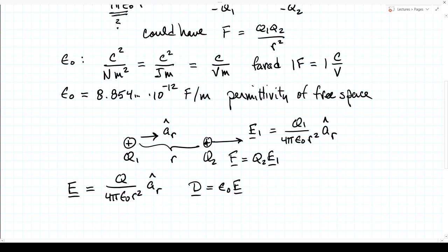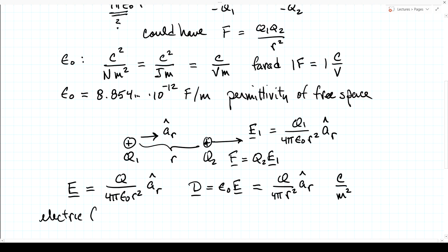D is defined by removing the ε₀ constant, so D equals q over 4π r² times r̂. E has units of volts per meter, while D has units of Coulombs per square meter — Coulombs per area. E is called the electric field; D is called the electric flux density. In free space they are proportional to each other, with different units that turn out to be more convenient for different types of calculations.